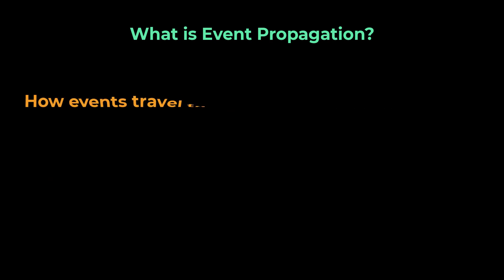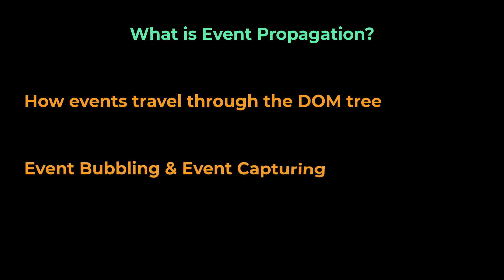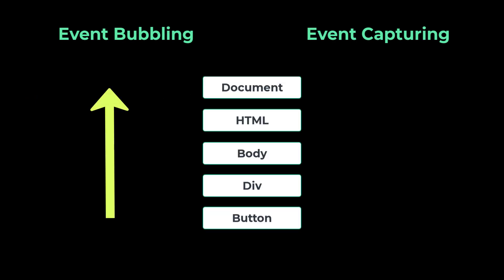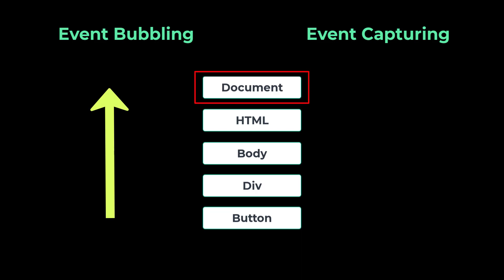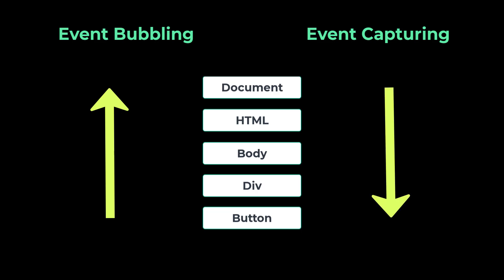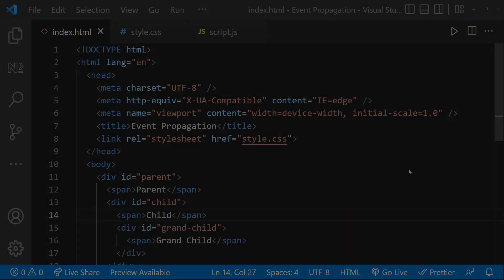Event propagation means how events travel through the DOM tree. Event bubbling and event capturing are the two phases of propagation. Bubbling travels from the target to the root — that means from the DOM element where the action is actually happening up to the root element, which is the highest-level parent, usually the document. Capturing travels from the root down to the target element. Let me explain using an example.